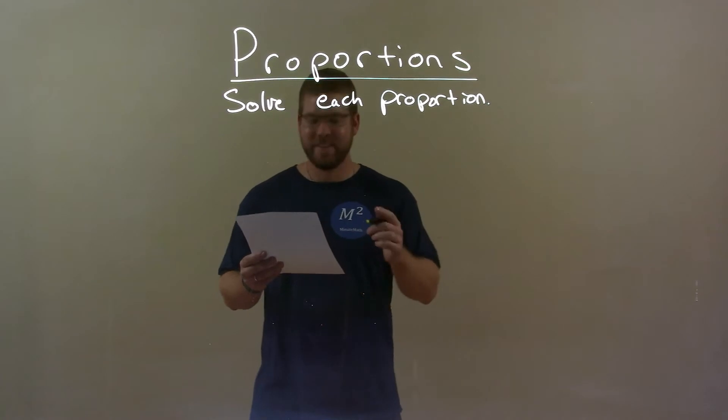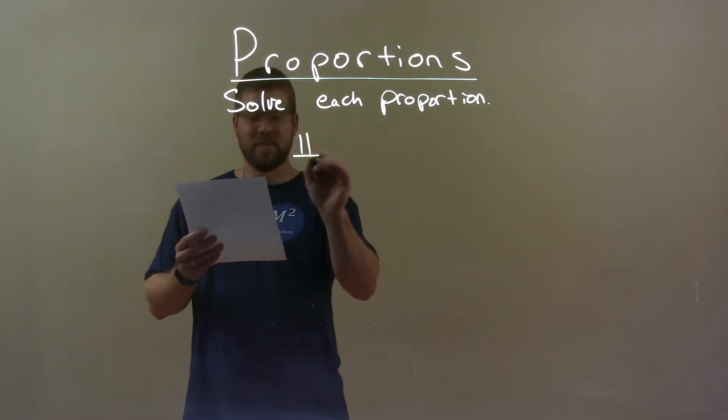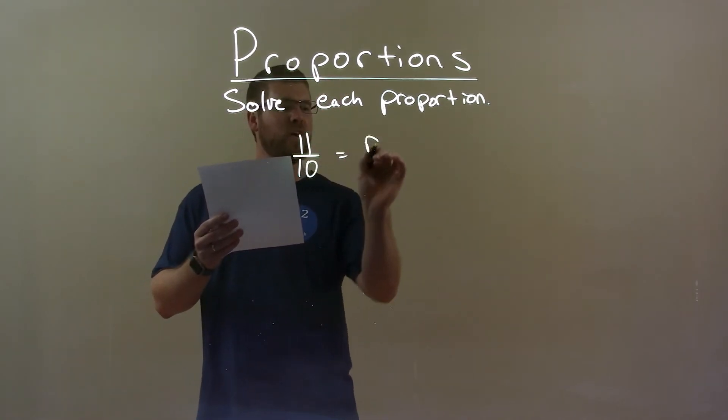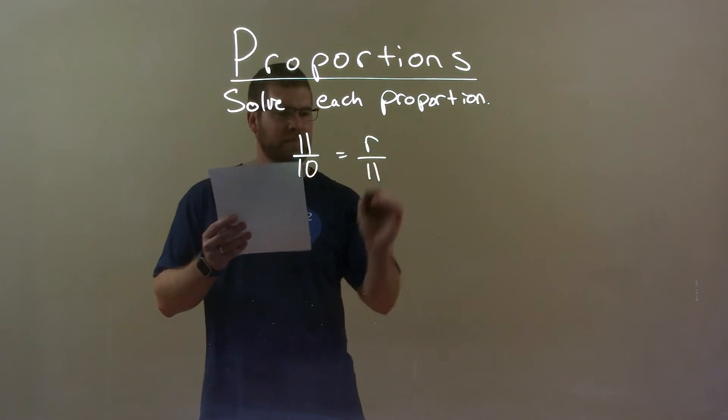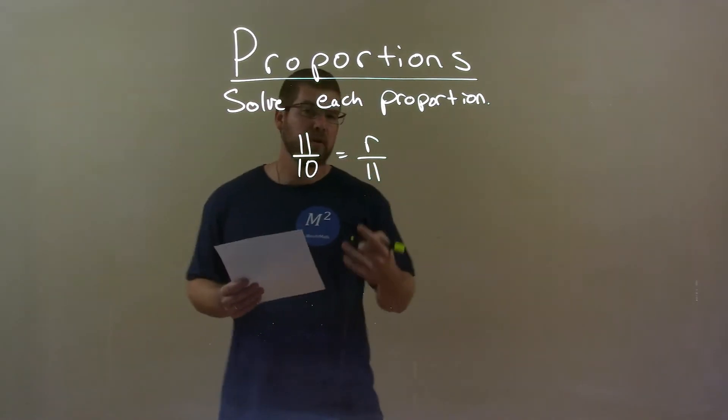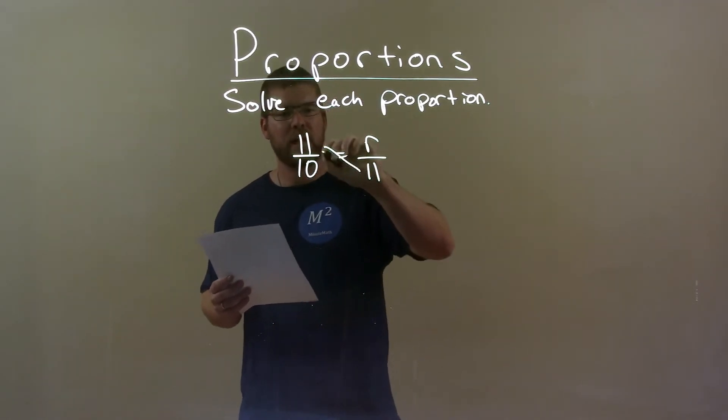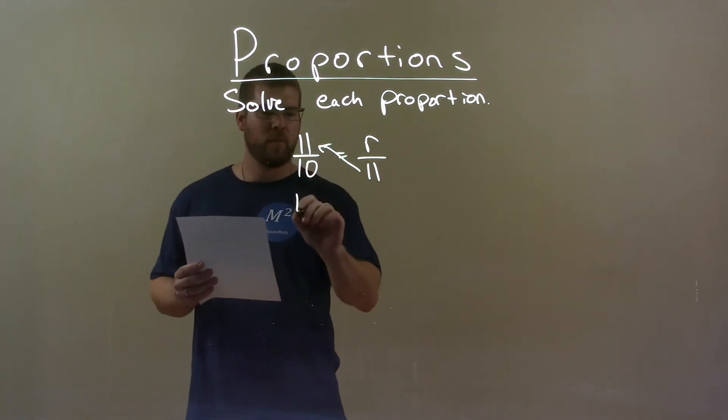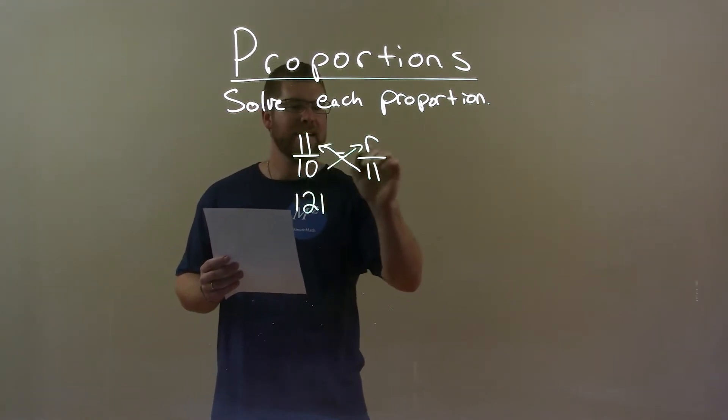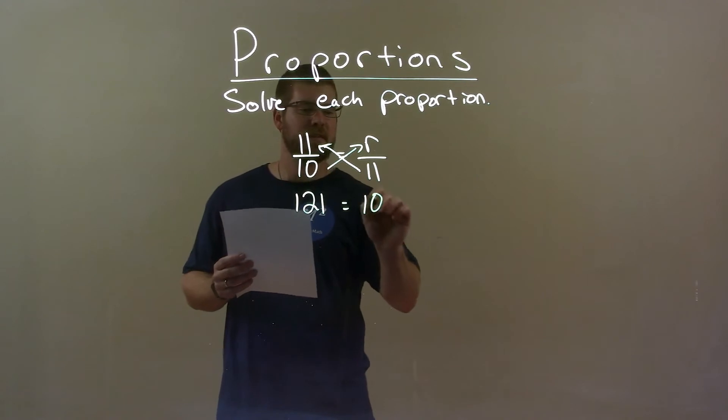So, if I was given this proportion, 11 over 10 equals r over 11, what I want to do is cross-multiply. 11 times 11 is 121, and 10 times r is just 10r.